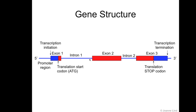The introns are not expressed in the final protein sequence made from this gene. So if we start at the five prime direction of the gene, the first thing that you will come across is what's called the promoter region.